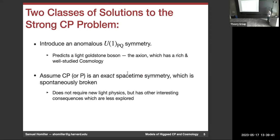The axion solution has enormous phenomenology and has been extremely well studied. But there's an entirely orthogonal class of solutions: you assume that at some high scale, either CP or parity is an exact symmetry of nature, spontaneously broken. If CP is an exact symmetry, there has to be some basis where all the parameters are real, which would predict theta-bar is zero. This doesn't in principle require any new light physics — you don't predict any kind of light boson — but it does have lots of interesting phenomenological consequences.